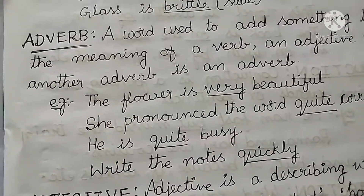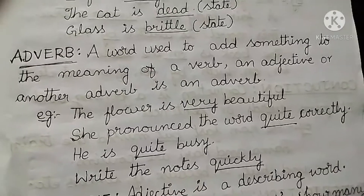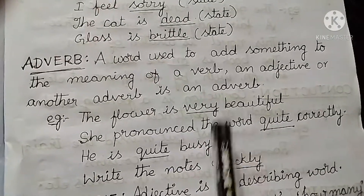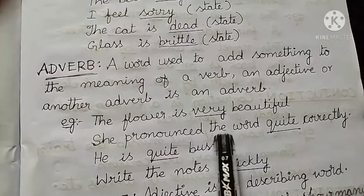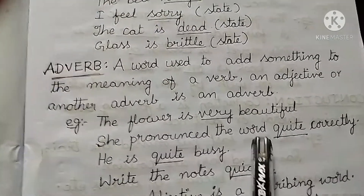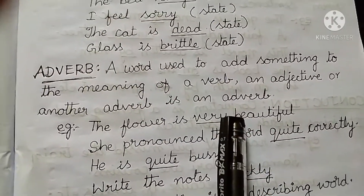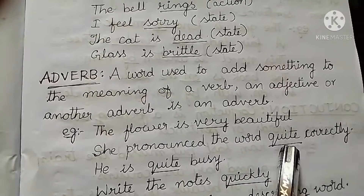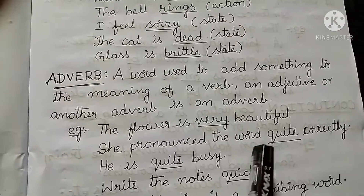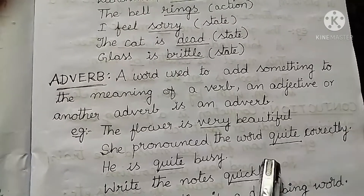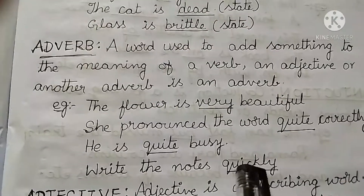Now coming to the adverb. A word used to add something to the meaning of a verb, an adjective, or another adverb is an adverb. An adverb modifies or describes a verb, an adjective, or another adverb. It changes an adjective, a verb, or another adverb — but never a noun. It usually answers the questions of when, where, how, why, under what conditions, or to what degree. Adverbs often end with -ly.